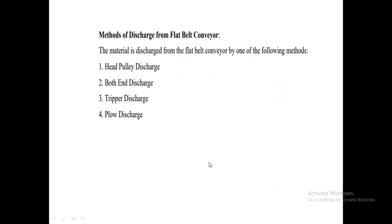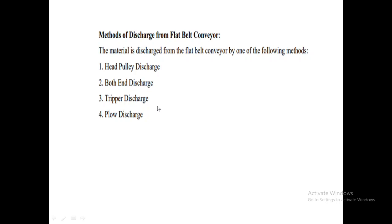Next, there are also four methods of discharge or unloading from the flat belt conveyor. The first is head pulley discharge, second is both-end discharge, third is tripper discharge (which is divided into fixed tripper discharge and traveling tripper discharge), and fourth is plow discharge.